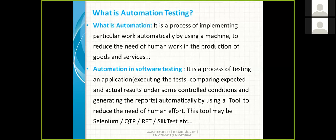What is automation? Automation is a process of implementing a particular task automatically using a machine or tool. We use software to reduce the need for human resources in the production of goods and services. Whenever you are manufacturing or working on a particular product using a machine or tool, that is called automation.